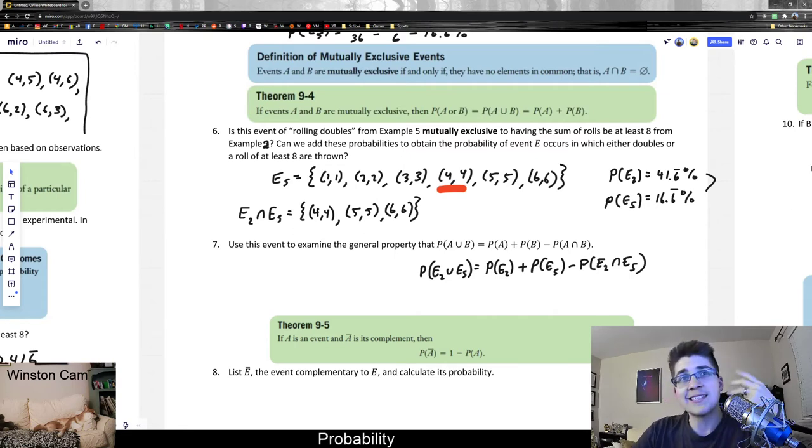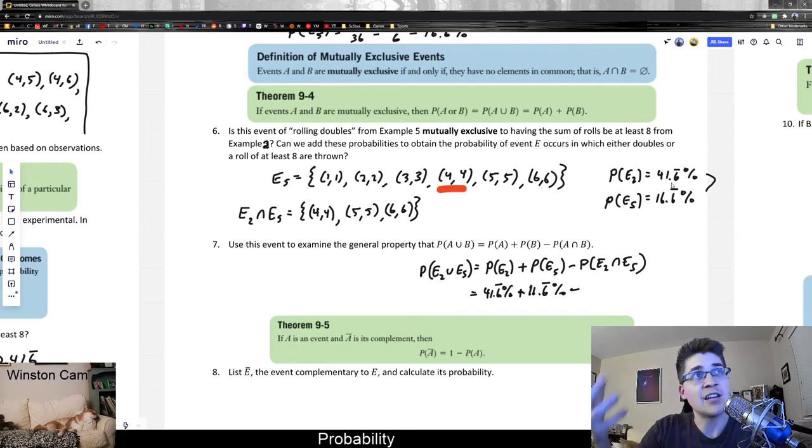And so the question might be, how would I ever remember this formula or why does this make sense? But essentially what this is saying is take the probability of one thing happening, which was basically a 41.6% chance to get at least a total roll. Add it to the probability of the second thing happening, which was the probability of rolling doubles. And then basically subtract off whatever the extra probability was. Like as I was just saying, those two probabilities have some overlap. If we just add them together, there's going to be too much. So the third part of this formula is basically subtract off however much is left over.